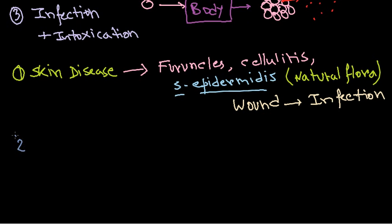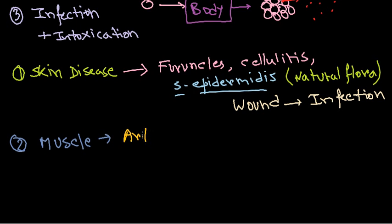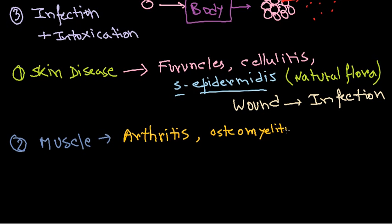The second type of diseases are musculoskeletal diseases. Examples of these are arthritis and osteomyelitis. Arthritis can be caused by different agents, but Staphylococcus is one of the more dangerous agents causing arthritis. Osteomyelitis is another significant musculoskeletal condition caused by Staphylococcus.